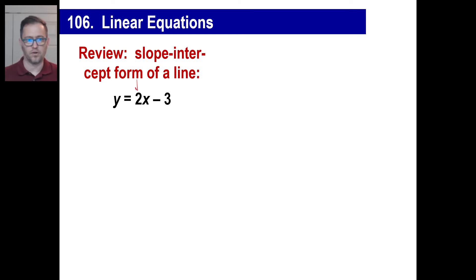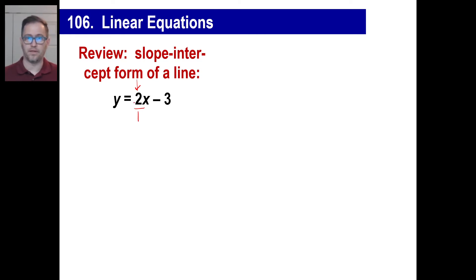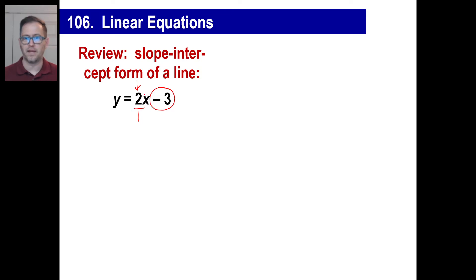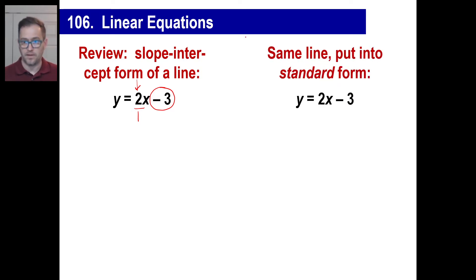The slope right here — as a fraction, it's two over one, or four over two, or 98.3 over 49.15 — it's all the same thing: two over one. That's where the line cuts across the y-intercept. You can just draw this and visualize it: it starts at negative three, goes up to the right, two up and then one over, two up and then one over. That's how you visualize that line.